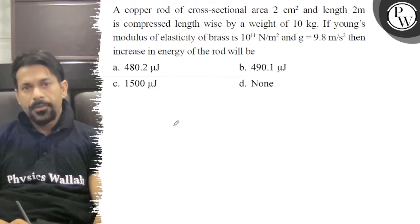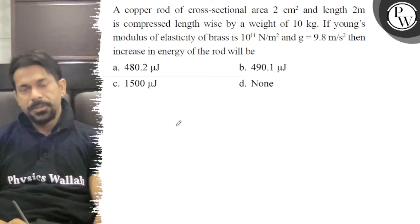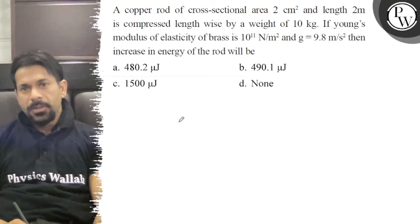Hello Bacchus, let's see the question. A copper rod of cross-sectional area 2 cm² and length 2 m is compressed lengthwise by a weight of 10 kg. If Young's modulus of elasticity is 10^11 N/m² and g = 9.8 m/s², then the increase in potential energy is...